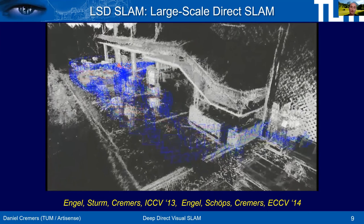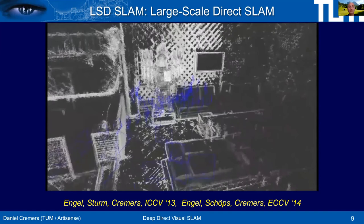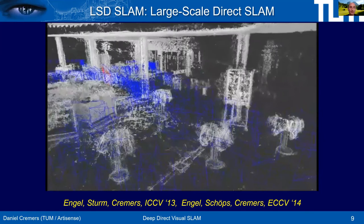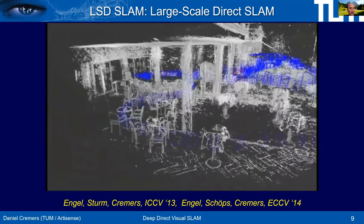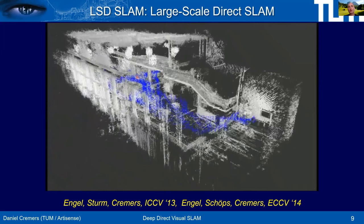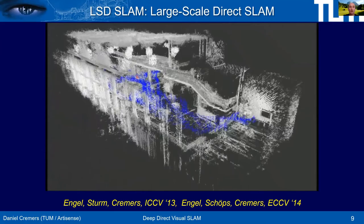A follow-up work to LSD-SLAM is direct sparse odometry, or DSO — the next generation. LSD-SLAM estimates camera motion and 3D structure alternatingly, but Kruppa showed it's a coupled chicken-and-egg problem that should be solved simultaneously. Rather than alternating threads, DSO reconstructs both simultaneously in a Gauss-Newton iterative manner — a photometric bundle adjustment done in a time-windowed fashion to achieve real-time performance.